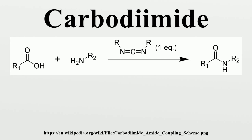DCC: DCC was one of the first carbidiamides developed. It is widely used for amide and ester formation, especially for solid-phase peptide synthesis. DCC has achieved popularity mainly because of its high-yielding amide coupling reactions and the fact that it is quite inexpensive. However, DCC does have some serious drawbacks, and its use is often avoided unless necessary. The by-product N,N-dicyclohexylurea is mostly removed by filtration, but trace amounts remain and are often difficult to remove.